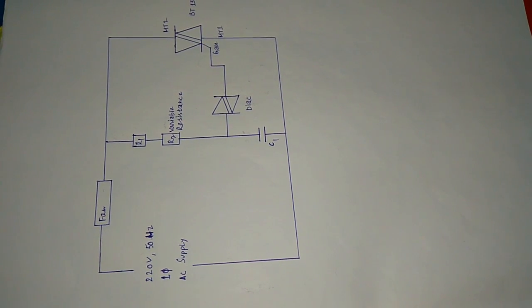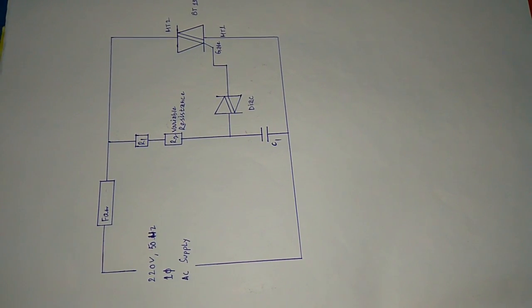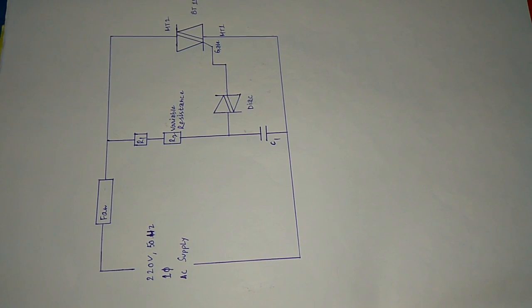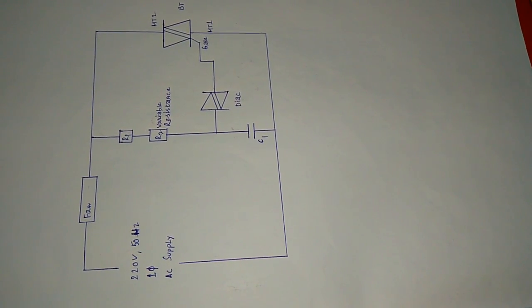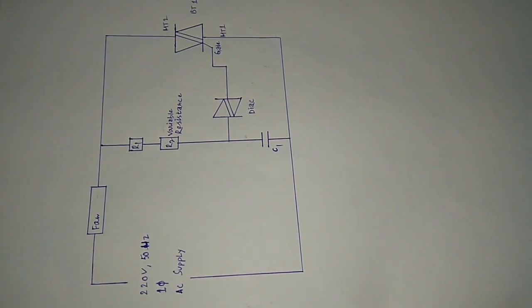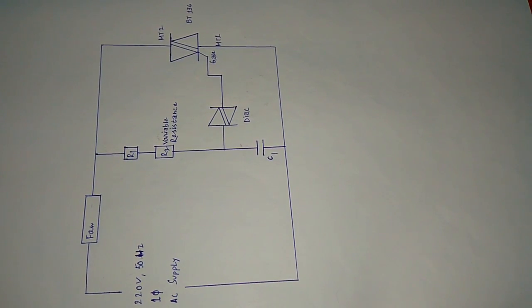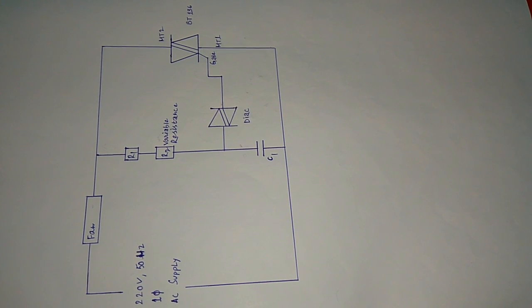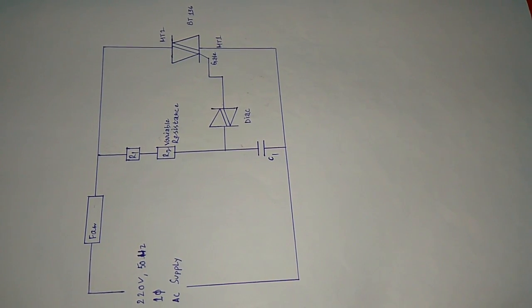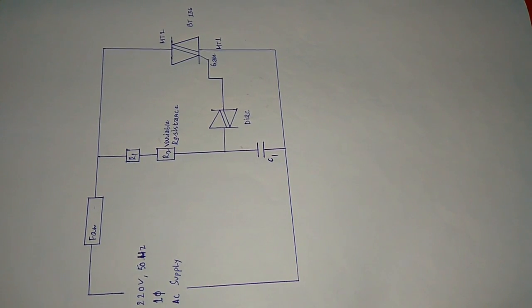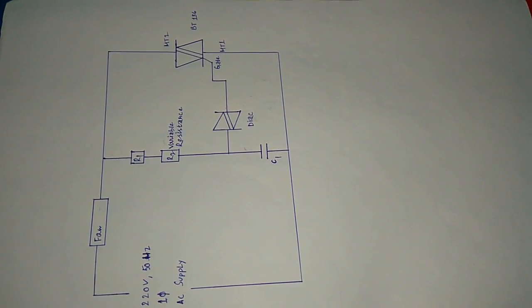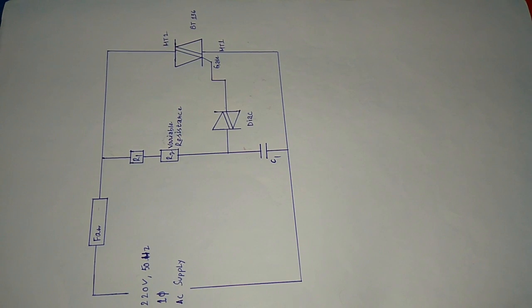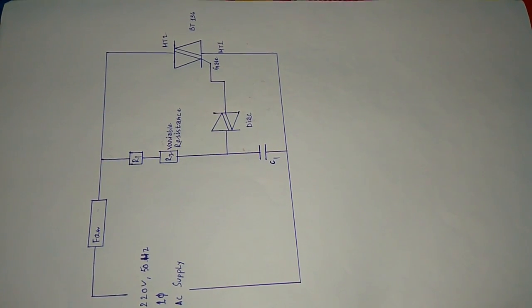One terminal of that variable resistance is connected to a DIAC, whose other terminal is used to trigger the TRIAC BT 136. The DIAC's other terminal is connected to a capacitor, and MT1 and MT2, these two terminals of TRIAC, are also being connected as per the circuit diagram.